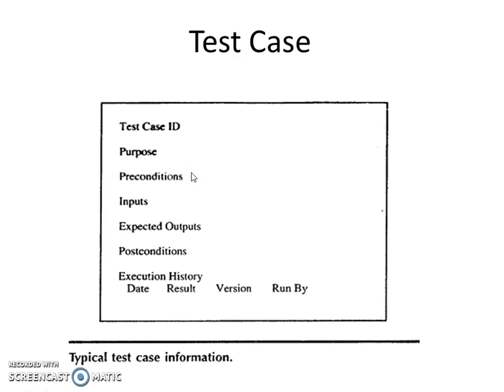Inputs are of two types: precondition and actual input. Precondition is the circumstances that should exist prior to test case execution. For example, in an ATM system, the precondition is that a welcome screen is displayed and the user is prompted to insert the ATM card. The actual input is the act of inserting the card.